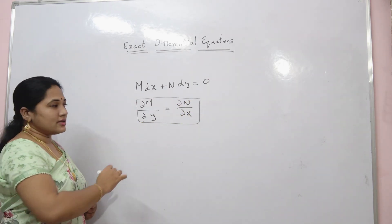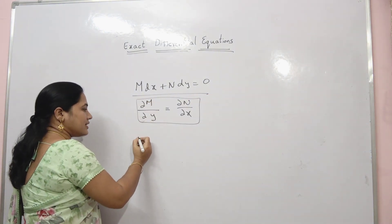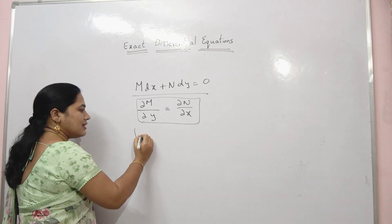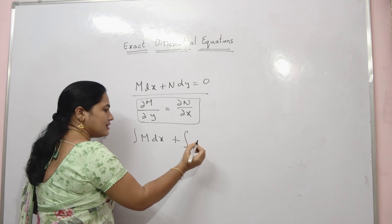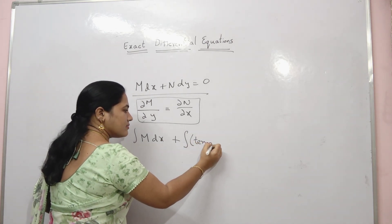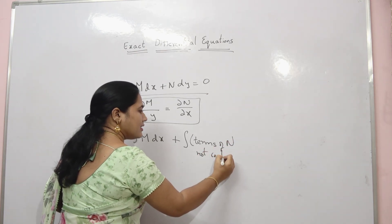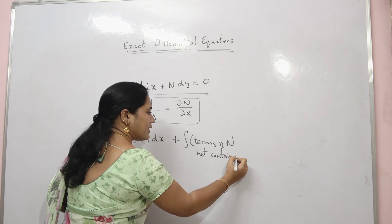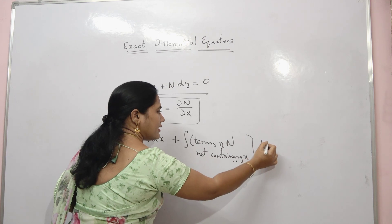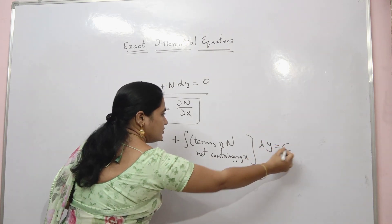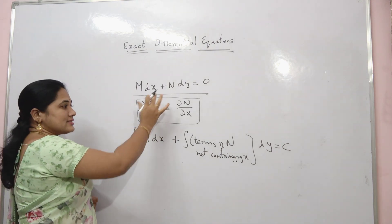The solution of the ordinary differential equation is: integral of M dx plus integral of the terms of N not containing x, dy, equals to c. This is the general solution of the exact differential equation.